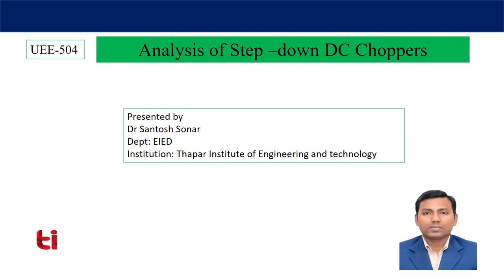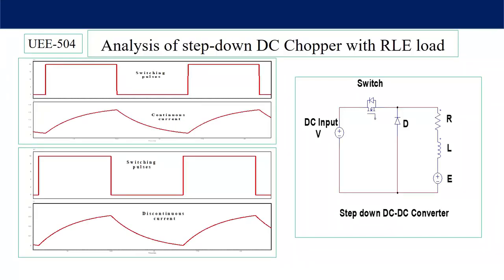Today I will analyze the complete DC-to-DC converter in continuous and discontinuous modes of operation. Last class I connected a resistive load, but today a more general RLE load is considered — this represents a motor load, where R is the winding resistance, L is the inductance, and E is the back EMF. To control motor speed, you can control the duty cycle to control the output voltage, but the output voltage will always be less than the input voltage.